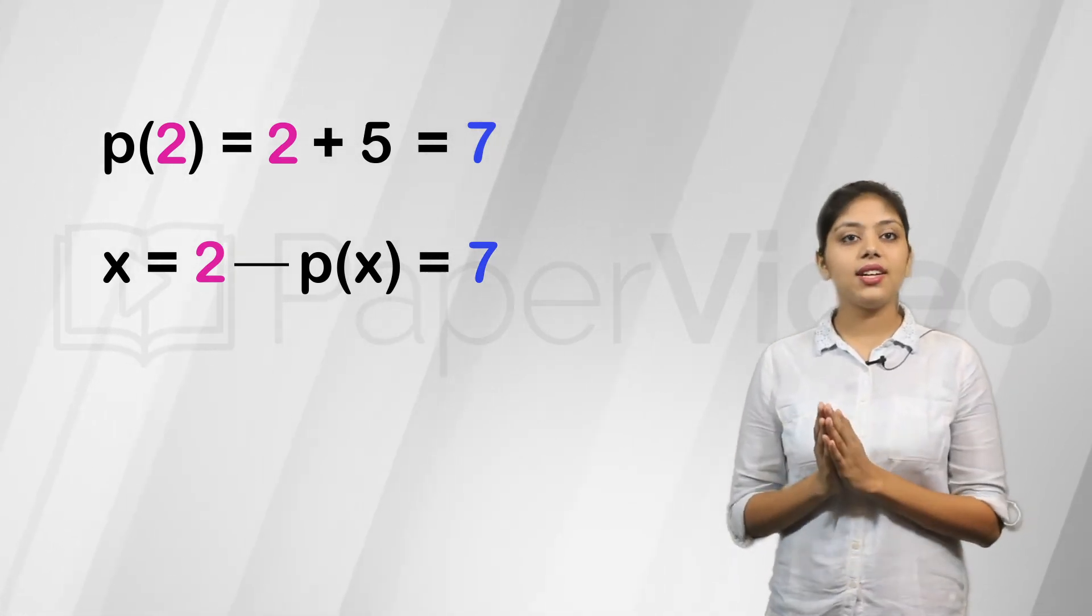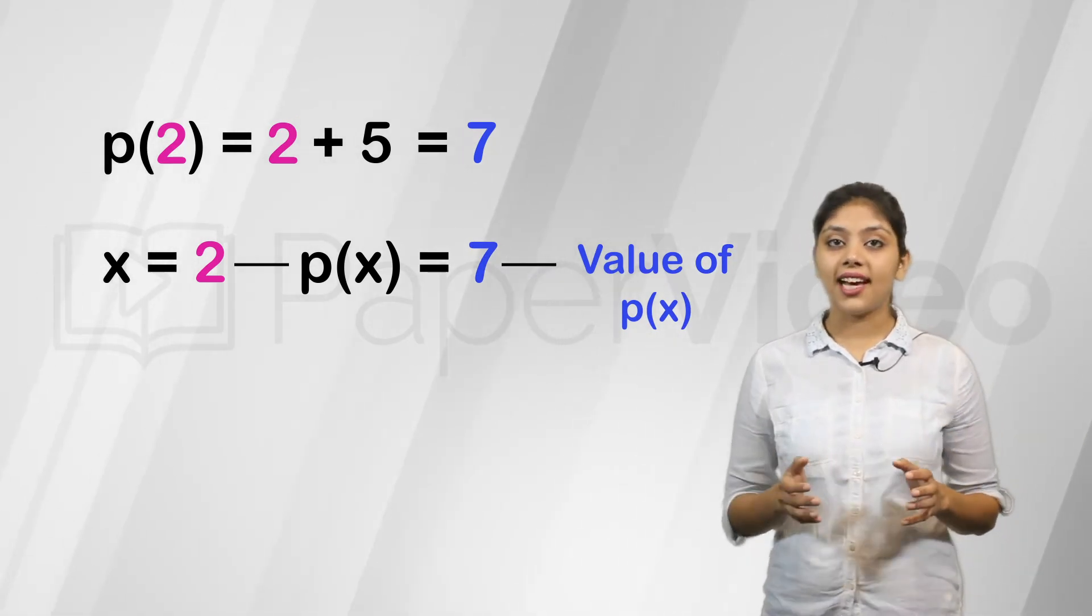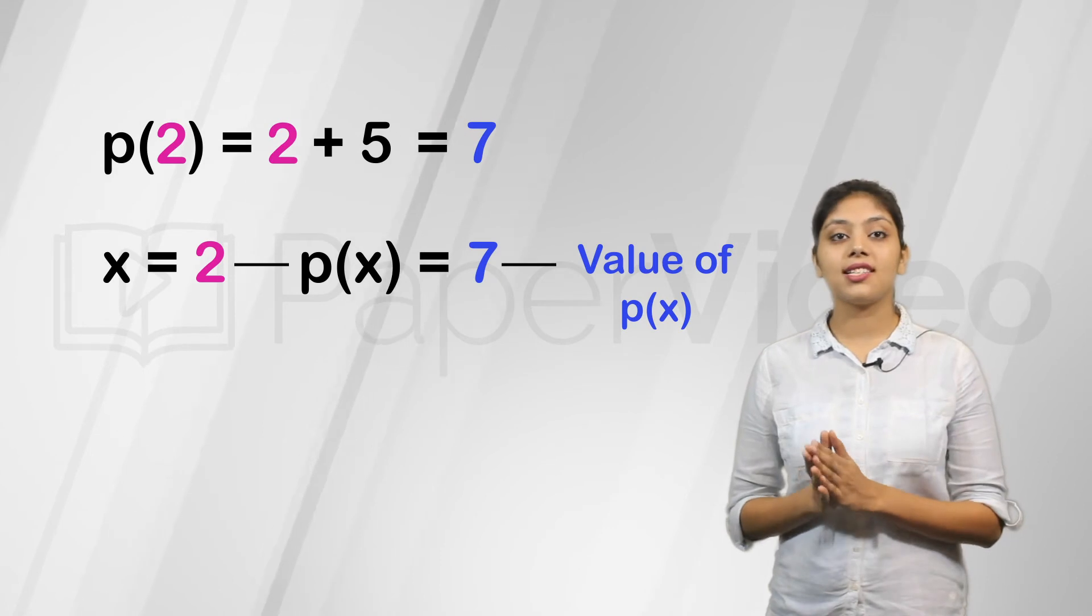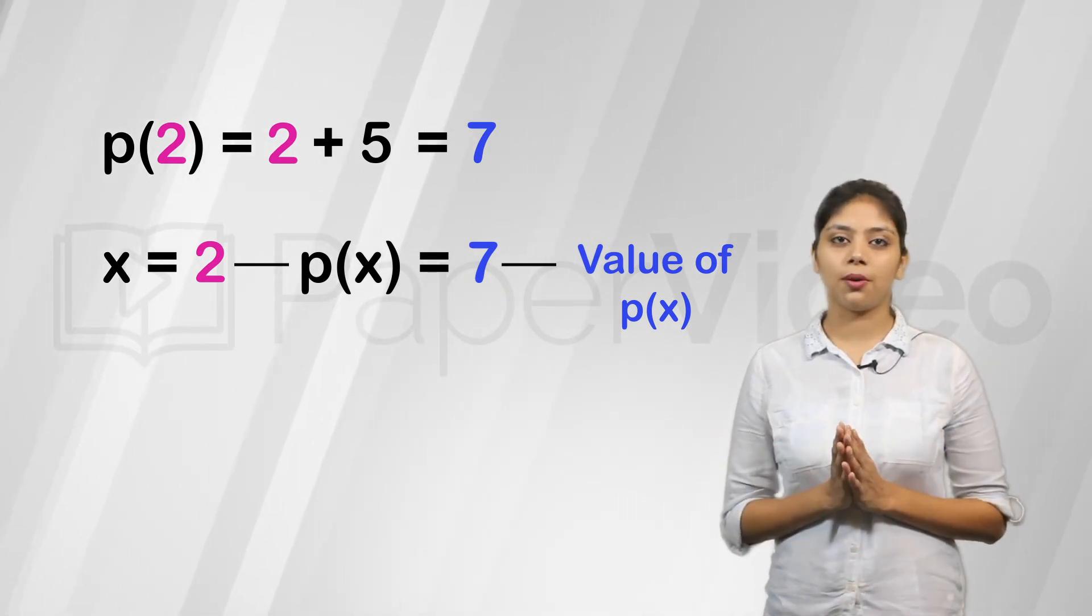Therefore, 7 is known as the value of polynomial p of x when x equal to 2. Thus, value of a polynomial is a number obtained when x is replaced by a number in the polynomial.